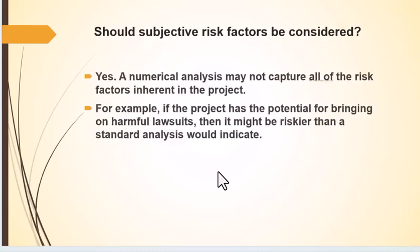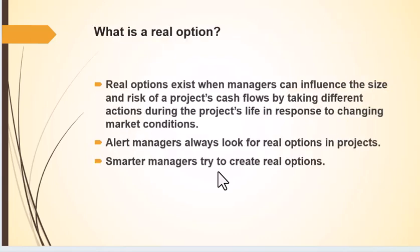Should we have some subjective risk factors? Of course, we should always use common sense when we know things that haven't been incorporated in the data. If we know that a project has the potential for lawsuits, we might want to add another 0.1 or so to the weighted average cost of capital to account for those different kinds of risks.